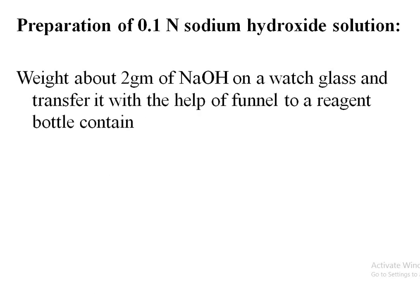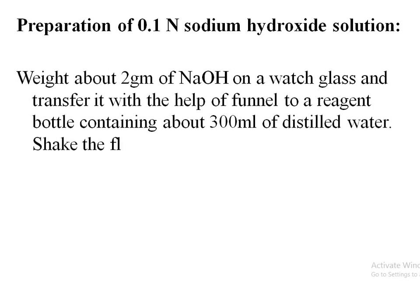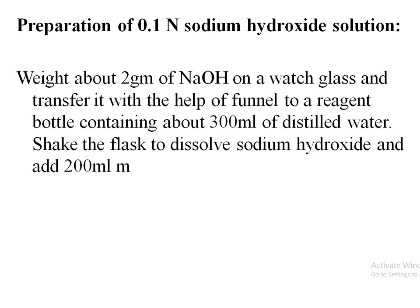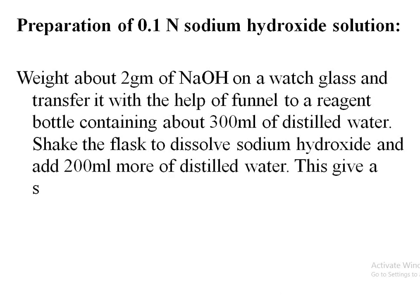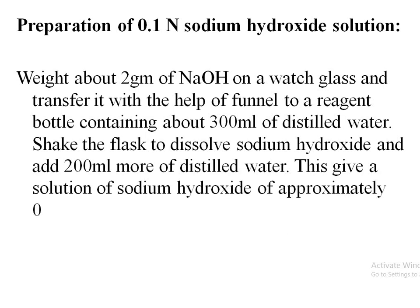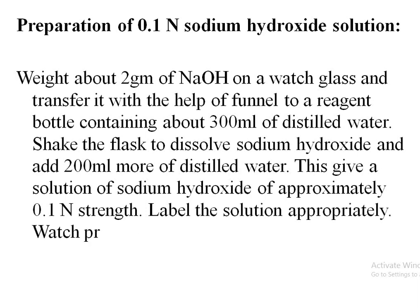Weigh about 2 grams of sodium hydroxide on a watch glass and transfer it with the help of a funnel to a reagent bottle containing about 300 ml of distilled water. Shake the flask to dissolve the sodium hydroxide and add 200 ml more distilled water. This gives a solution of approximately 0.1 normal strength. Watch the previous video for how we calculate that 2 grams of NaOH is needed to prepare 500 ml of NaOH solution.